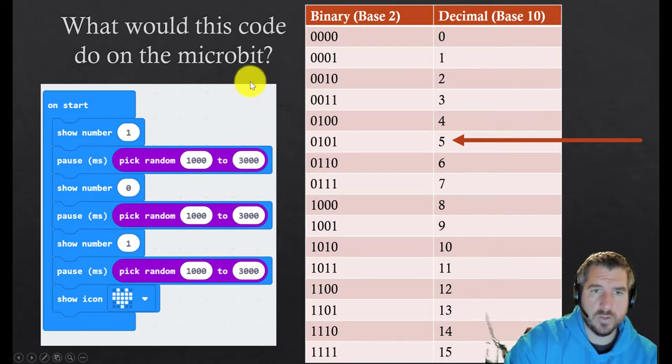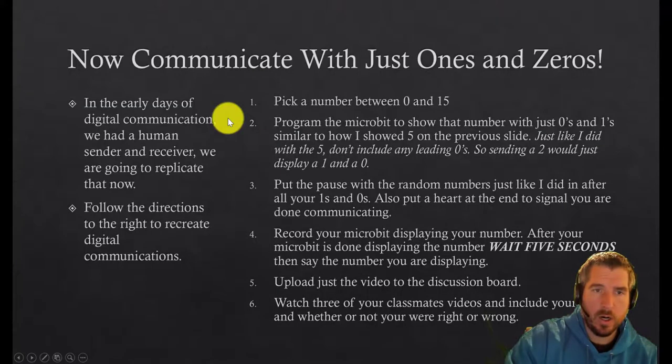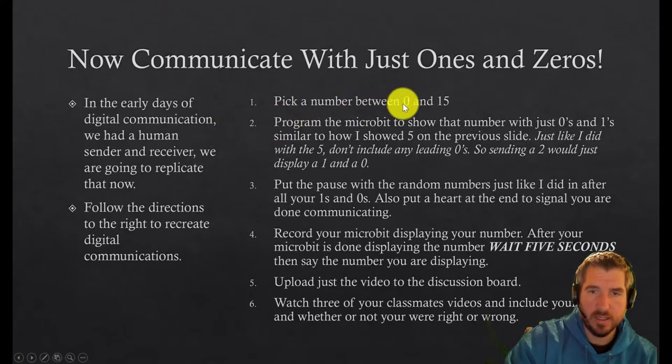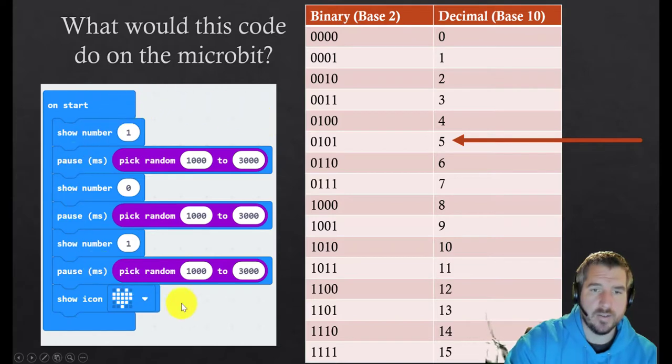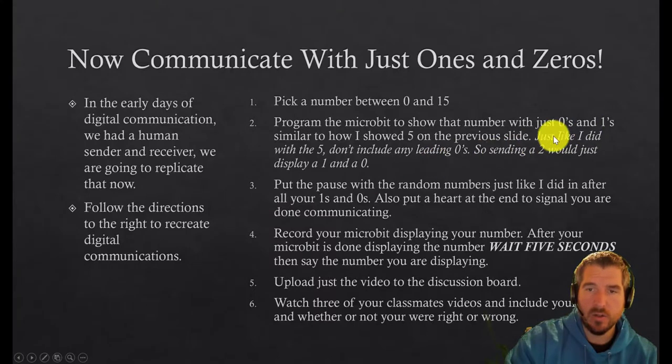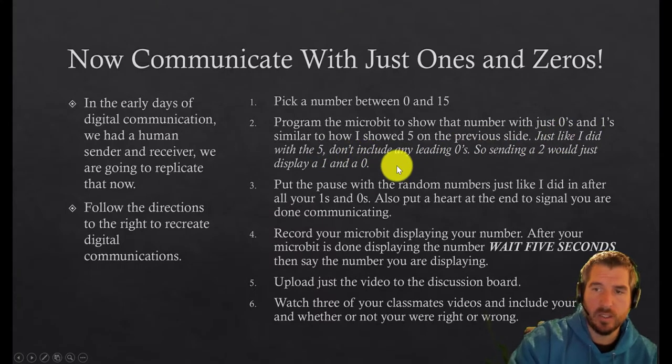Okay, so now the next thing that you're going to do is you are going to recreate this activity. So you are going to pick a number between zero and 15, then you're going to program the micro:bit to show that number with just the zeros and ones. So your program is going to look very similar to this but it's going to be your binary here. So if you pick nine you'd be showing one zero zero one.